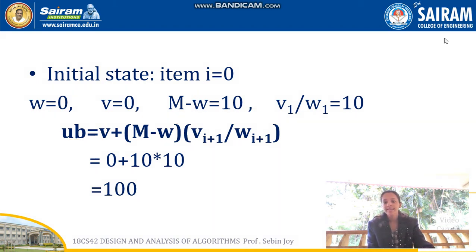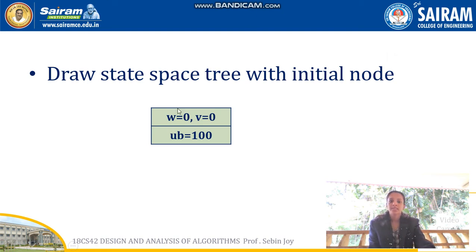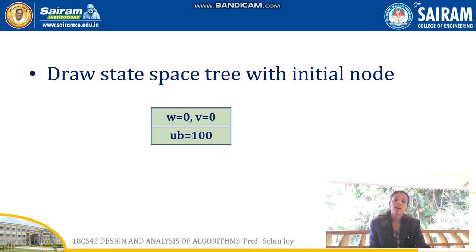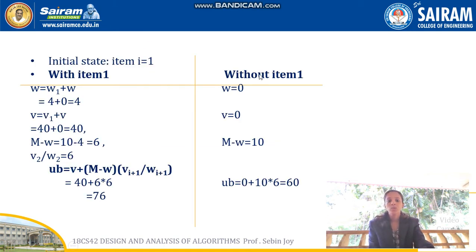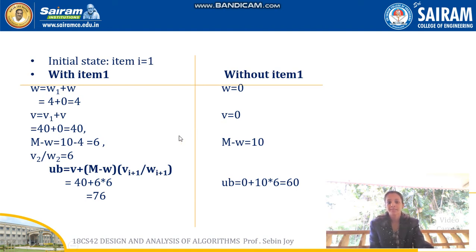Now we draw the state space tree. The initial node has weight = 0, value = 0, and upper bound = 100. We take the first item and consider adding it to the knapsack. When i = 1, we calculate upper bound in two ways: with item 1 and without item 1. With item 1, the current weight W = previous weight + weight of item 1 = 0 + 4 = 4.